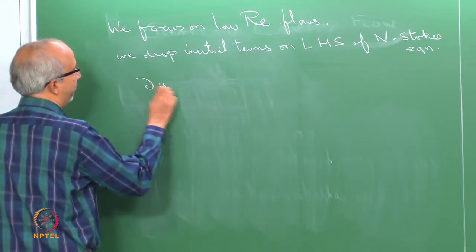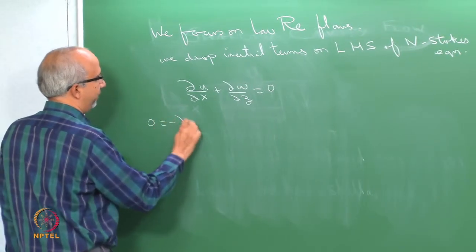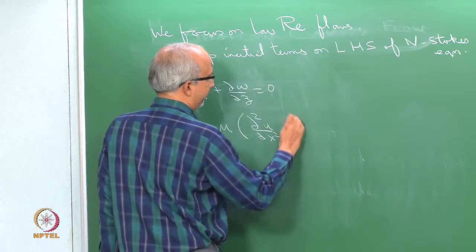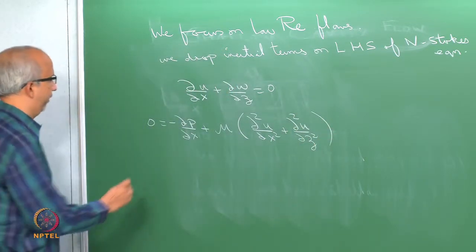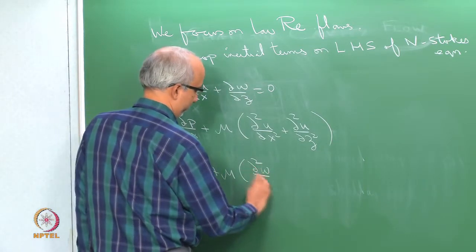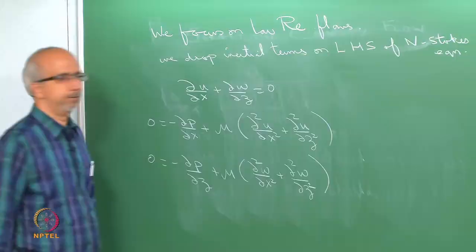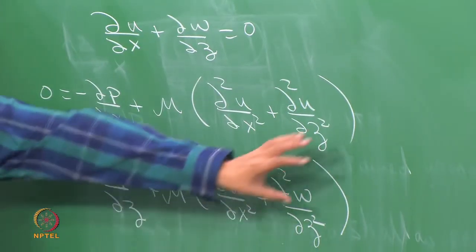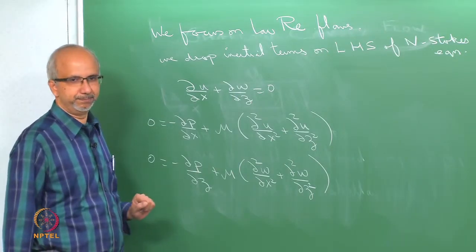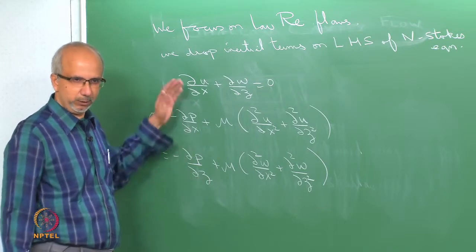For low Reynolds number flows, we drop the inertial terms on the left-hand side of the Navier-Stokes equations. The equation of continuity is ∂u/∂x + ∂w/∂z = 0, and the x-momentum equation becomes 0 = −∂p/∂x + μ(∂²u/∂x² + ∂²u/∂z²). Gravity is absorbed into a modified pressure term as a gradient.